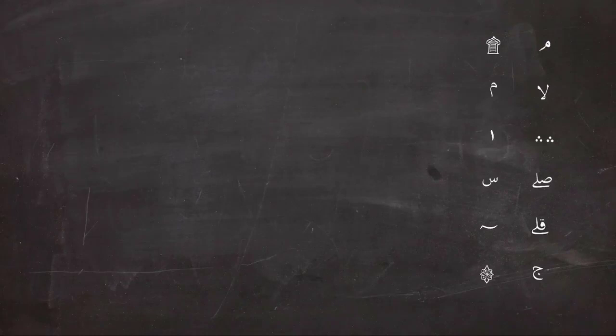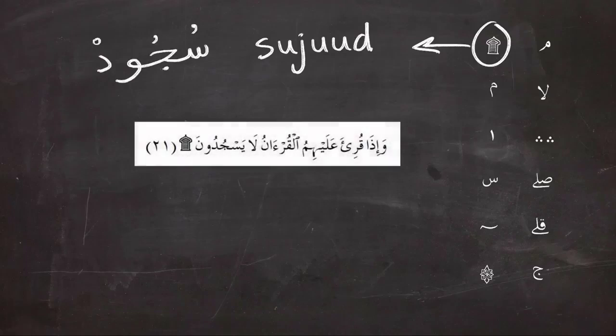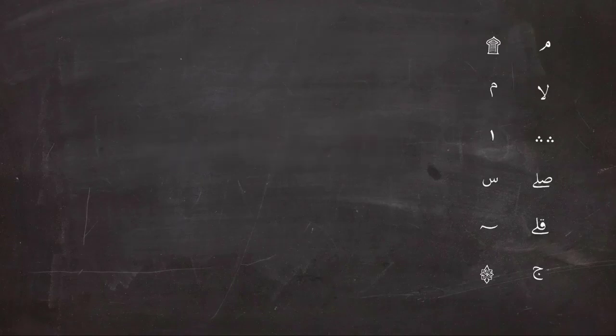Now let's talk about the other six symbols. The first one is a symbol that means sujood or prostration. In total there are 15 of this sign, and each time you see it and after you read the verse, you have to do sujood. So after reading the ayah, you will prostrate for God.